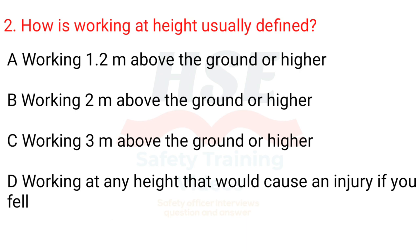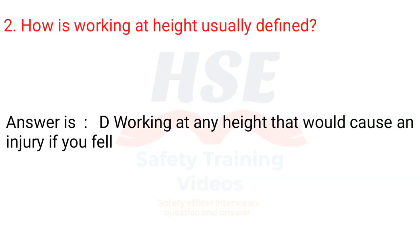Question 2: How is working at height usually defined? A. Working 1.2 metres above the ground or higher. B. Working 2 metres above the ground or higher. C. Working 3 metres above the ground or higher. D. Working at any height that would cause an injury if you fell. Answer is D. Working at any height that would cause an injury if you fell.